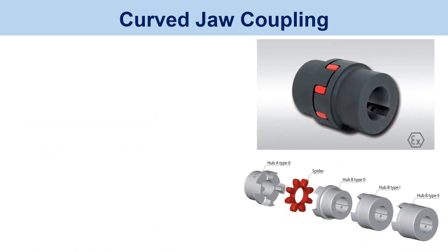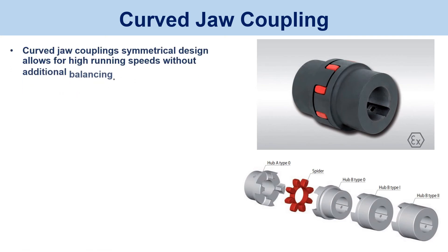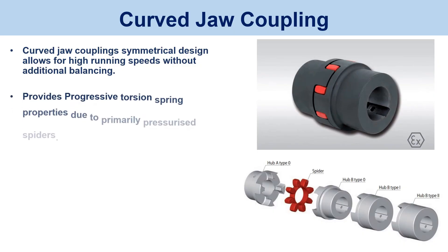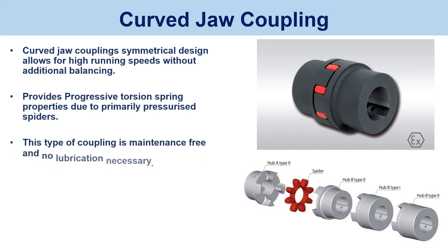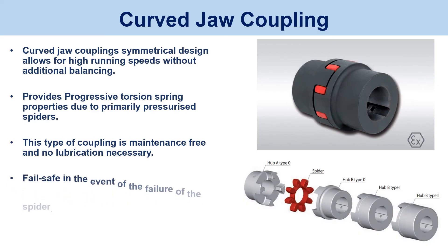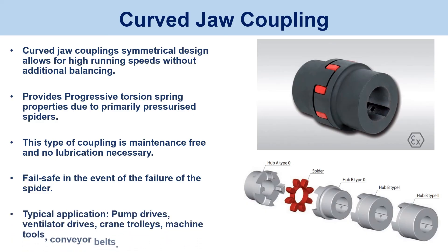Curved jaw coupling. The curved jaw coupling's symmetrical design allows for high running speeds without additional balancing. It provides progressive torsion spring properties due to primarily pressurized spiders, and is maintenance-free with no lubrication necessary. Fail-safe in the event of failure of the spider. Typical applications include pump drives, ventilator drives, crane trolleys, machine tools, and conveyor belts.